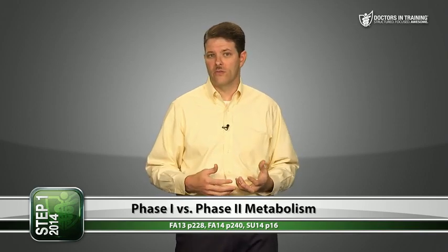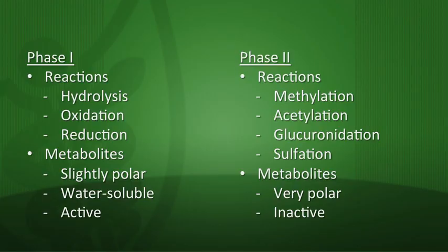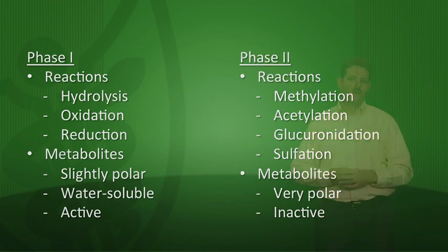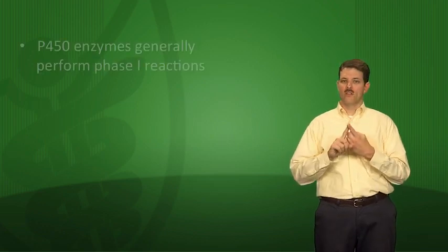A drug might go through phase one metabolism on the first pass through the liver and then phase two on the second pass, or vice versa, or both phases on one pass — it varies drug to drug. In general: phase one reactions are hydrolysis, oxidation, and reduction, creating a slightly polar molecule that's still active; phase two reactions are conjugation reactions that create a very polar, inactive molecule.